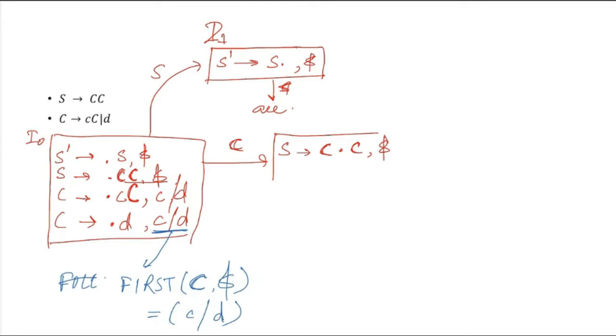After the dot we got a capital C, so this was I1. Then this will be I2, and we have to add production rules headed by capital C.